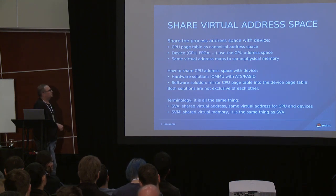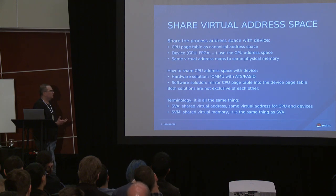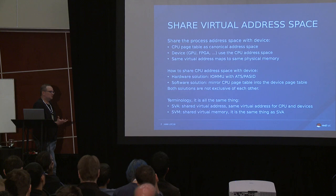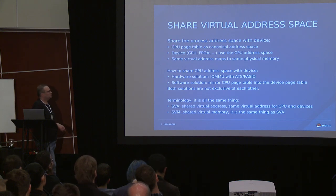That's where the idea of a Shared Virtual Address Space really comes in. The idea is you want to share the same process address space with the device, which means you want to use the CPU page table as a canonical address space for every device. Devices like GPU or FPGA will use the same address space and share the same virtual addresses that map to the same physical memory underneath. That means any pointer will be valid on a GPU or on the CPU and always points to the same memory.